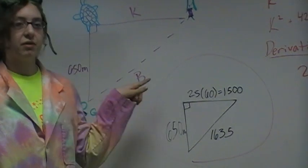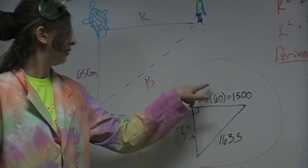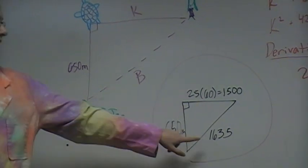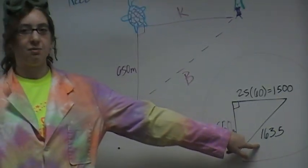And then we used the Pythagorean theorem, A squared plus B squared equals C squared, to figure out that B is 1,635 meters away.